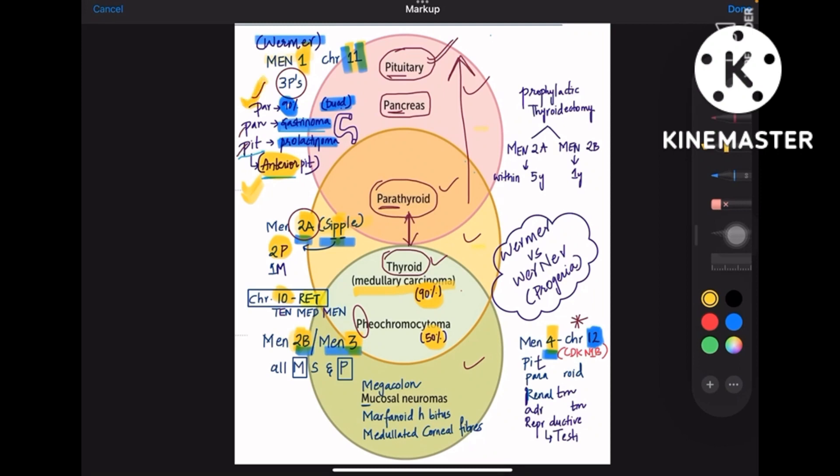So in MEN2A, medullary thyroid carcinoma is involved a lot, that is 90 percent, then comes pheochromocytoma 50 percent, and then is the parathyroid gland. Whereas in MEN1 parathyroid has most importance, in MEN2 medullary gland has most importance.